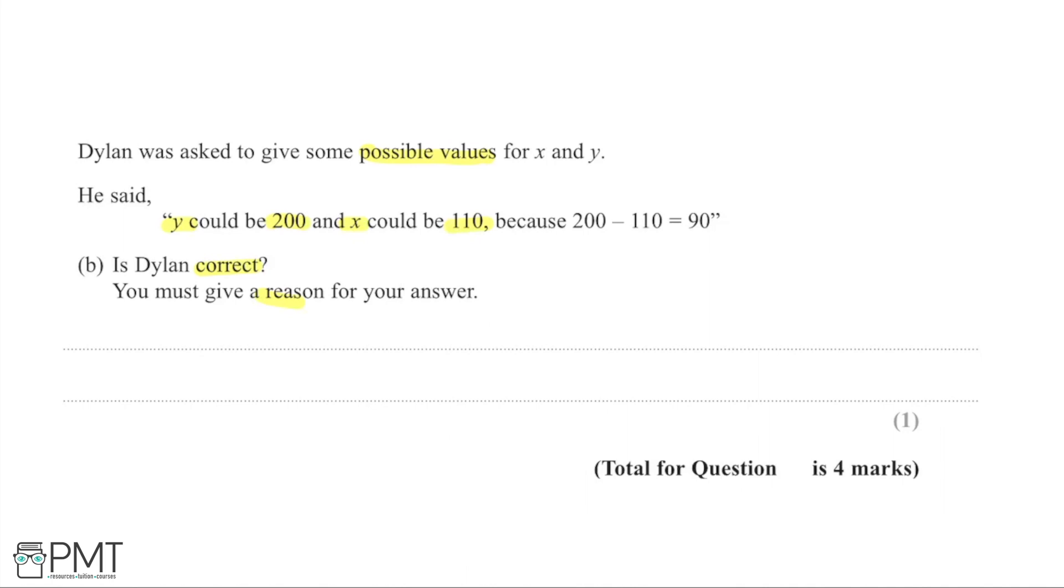Now we know that this can't be possible because if angles in the triangle sum to 180, y has got to be less than 180 because it's in a triangle, so it can't be 200 in this sense. And that is going to be sufficient reasoning to gain us the mark here. So I'm going to state my answer as no, y must be less than this value of 180 as it is an angle which is in a triangle, and the angles in a triangle sum to 180. And that will gain us the mark here.